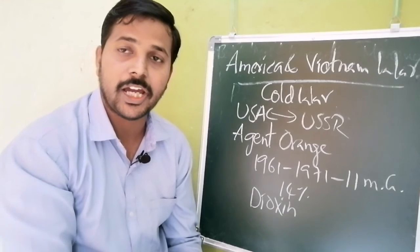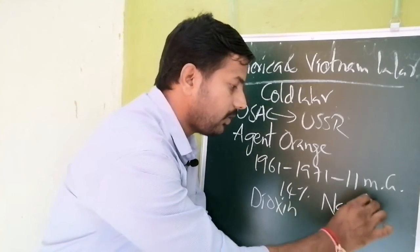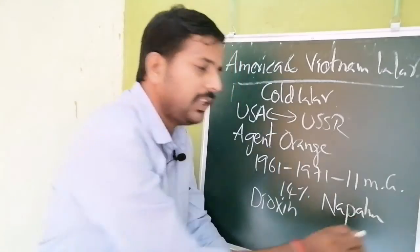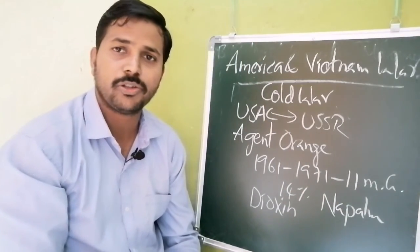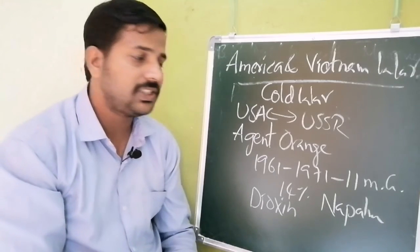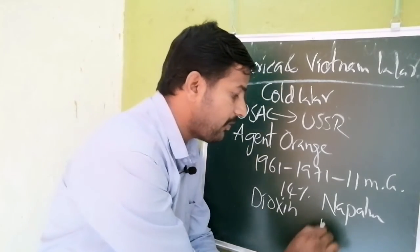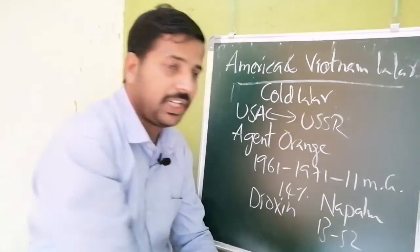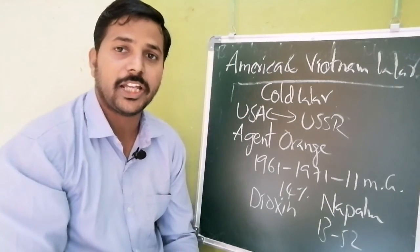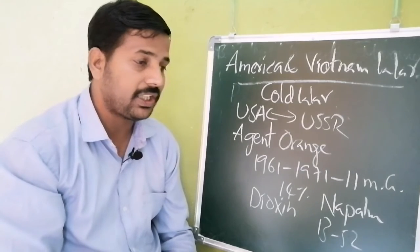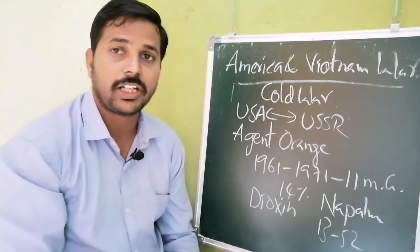In addition to Agent Orange, America also used napalm — a deadly weapon which causes intense damage to human beings — and B-52 bombers, which were the most powerful modern aircraft at that time, during the America-Vietnam War.